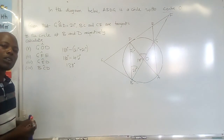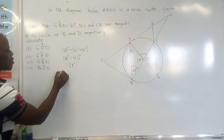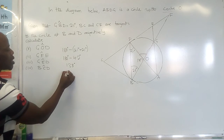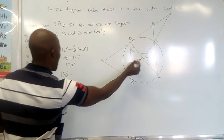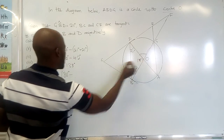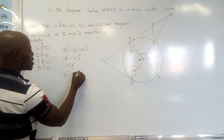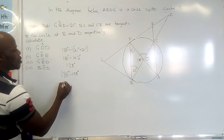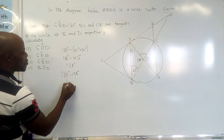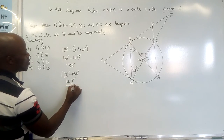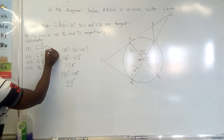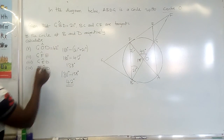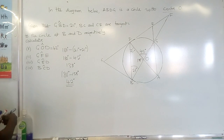In order to find the required angle, we use the property of a straight line, which says the straight line equals 180 degrees. So 180 degrees minus 138 degrees gives our answer equal to 42 degrees. So this angle is 42 degrees.